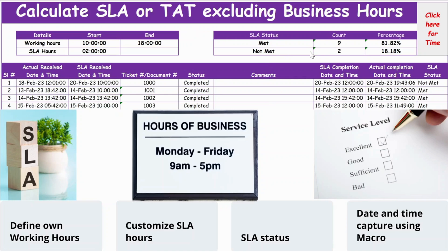You also have the SLA status. In this table you can see what is met and what is not met — nine cases are met and two are not met. You can also see the percentage and the live count, which updates as soon as you complete a case. For date and time capture, using a macro you just need to select the cell and click — the current date and time will be automatically captured.